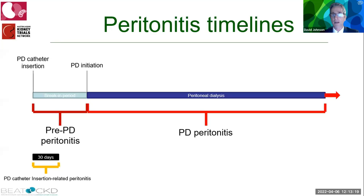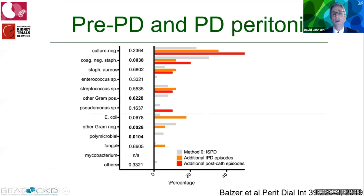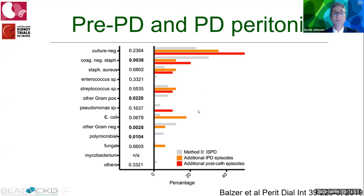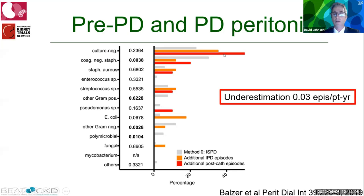The justification for these definitions comes from a 2019 PDI study showing a significant incidence of peritonitis before PD commencement — in the period after catheter insertion during IPD and during the pre-PD period. If pre-PD peritonitis were not counted, the overall number of peritonitis episodes would be underestimated by approximately 0.03 episodes per patient-year. The ISPD guidelines therefore recommend pre-PD peritonitis be separately reported.